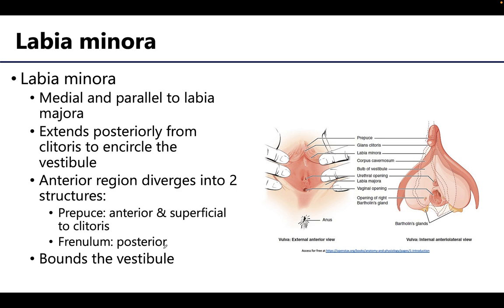The labia minora are two smaller cutaneous folds that lie medial and parallel to the labia majora. The minora extend posteriorly from the clitoris and encircle and form the lateral boundaries of the vestibule of the vagina. Anteriorly, each labia minora will bifurcate into two parts: the superior portion passes anterior and superficial to the clitoris and is referred to as the prepuce or hood of the clitoris, while the posterior portion is referred to as the frenulum of the clitoris.